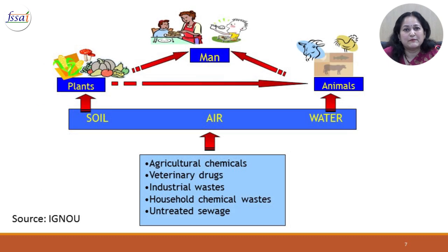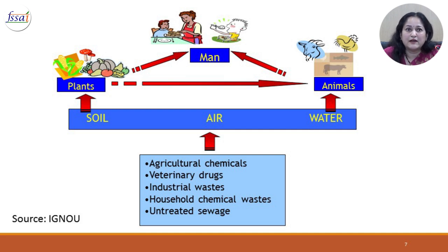Chemical contaminants can enter our food chain because of agricultural chemicals, veterinary drugs, industrial wastes thrown into soil, air and water, as well as chemical wastes from households and untreated sewage. Plants growing in contaminated soil and animals feeding on these plants can be contaminated. Man is on top of the food chain and when he consumes these contaminated plants and animals, he too receives all these toxins.